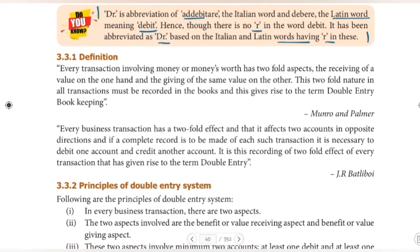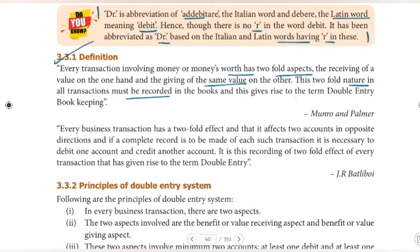Moving on to the definition: every transaction involving money or money's worth has two-fold aspects — the receiving of a value on one hand and the giving of the same value on the other. This two-fold nature in all transactions must be recorded in the books. This gives rise to the term double entry bookkeeping. So all money's worth transactions have two-fold aspects: a receiving aspect on one hand and a giving aspect on the other.